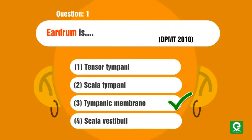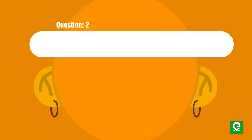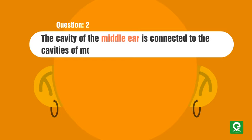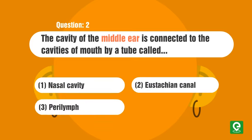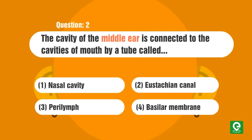Question two: The cavity of the middle ear is connected to the cavities of mouth by a tube called: 1) nasal cavity, 2) eustachian canal, 3) perilymph, or 4) basilar membrane?